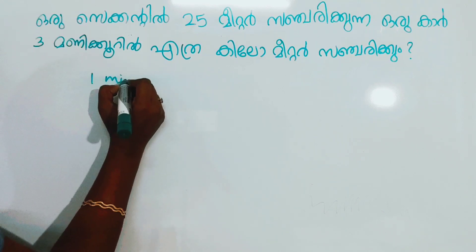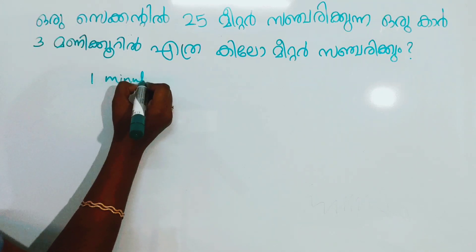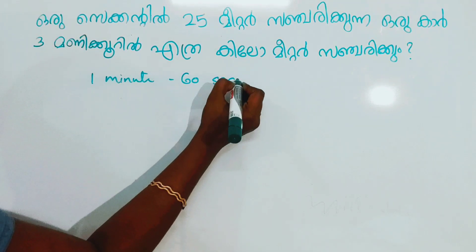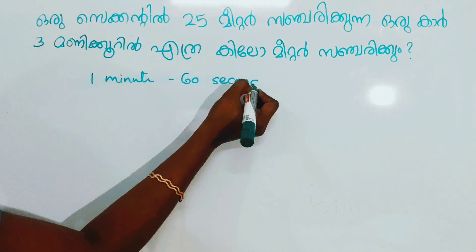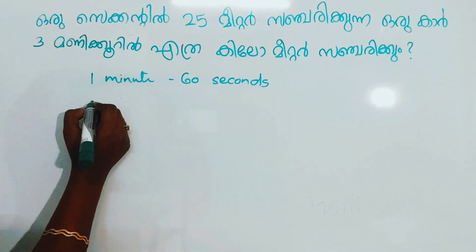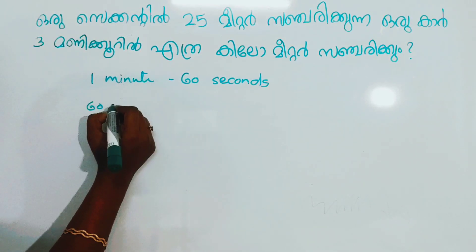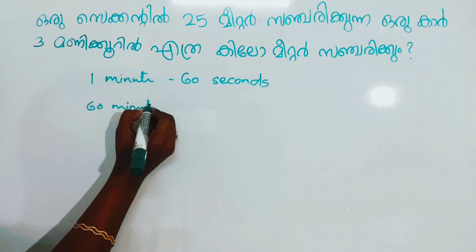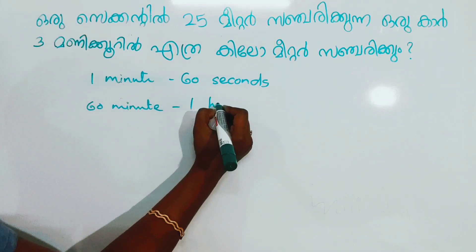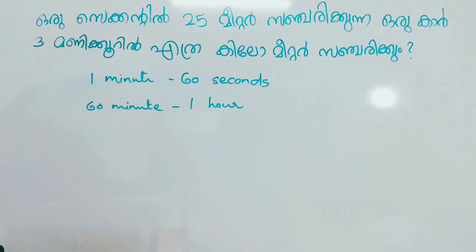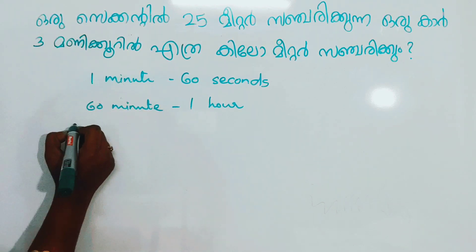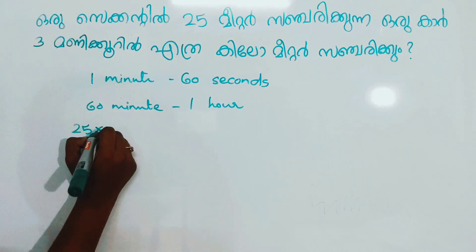One minute — what is it? Sixty seconds. Sixty minutes make one hour. In one minute, how many seconds do we have? That is 60.